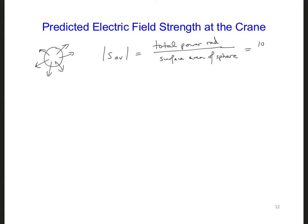So we assumed 10 kilowatts, so we have 10,000 over 4 pi, and r is 230 meters, so 230 squared, and we get 0.015 watts per meter squared.